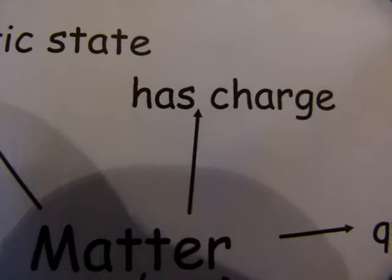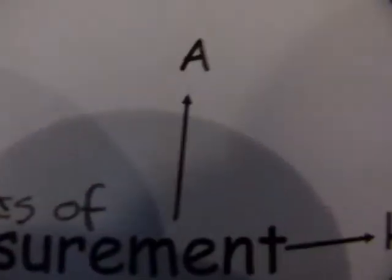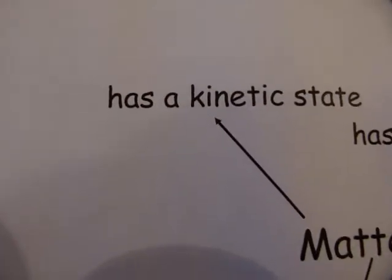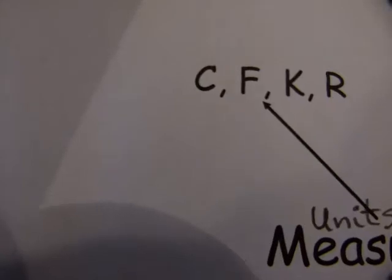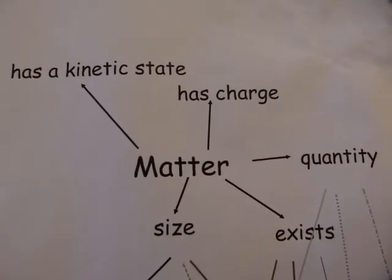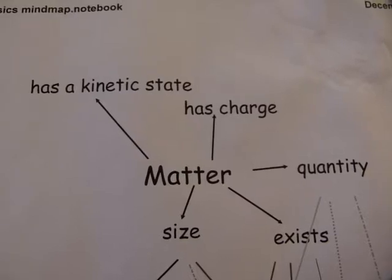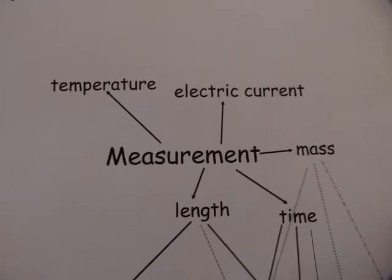Matter's electric charge is referred to as electric current, and it's measured in amps — that's 'A' for amps, not area. Matter's kinetic state, when it comes to measurement, is referred to with the word temperature, and temperature is measured in Celsius, Fahrenheit, Kelvin, or Rankine. So these are the basic qualities of matter that can be investigated, how they're referred to, and their units of measurement.